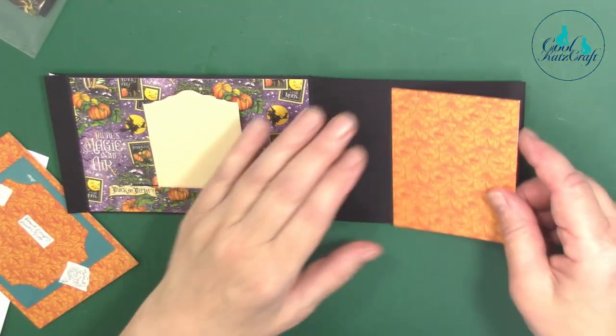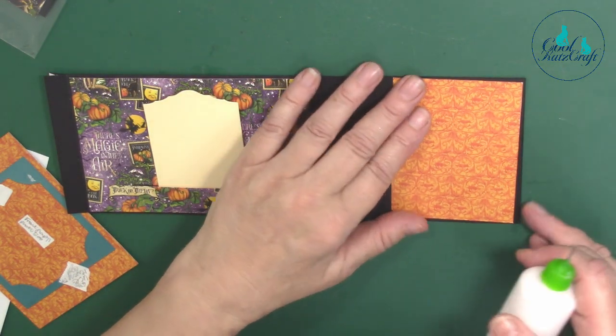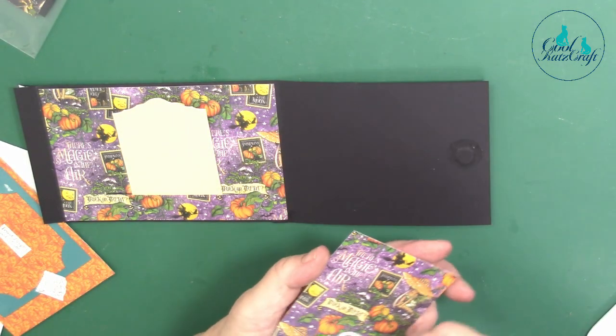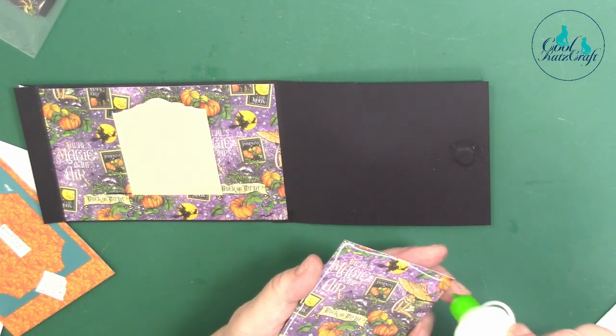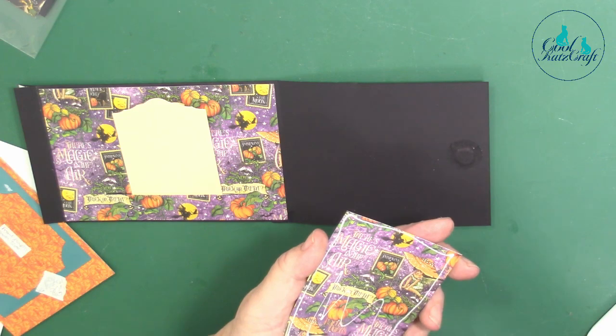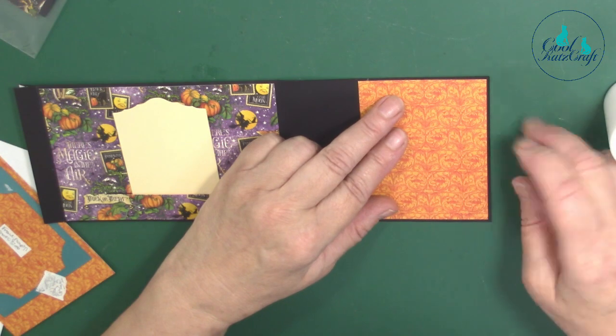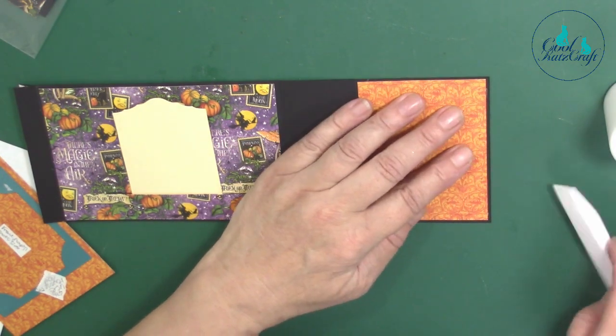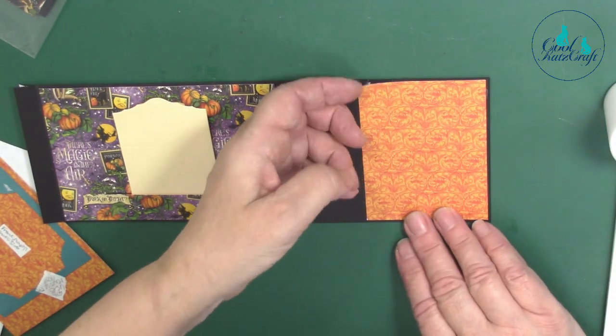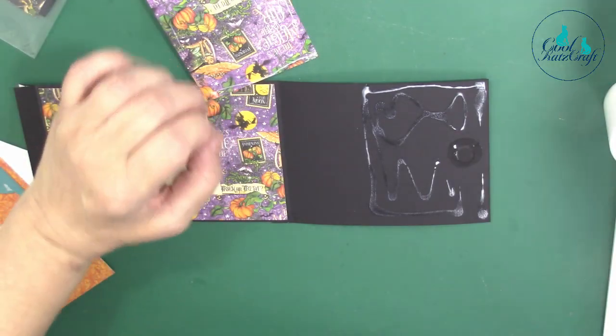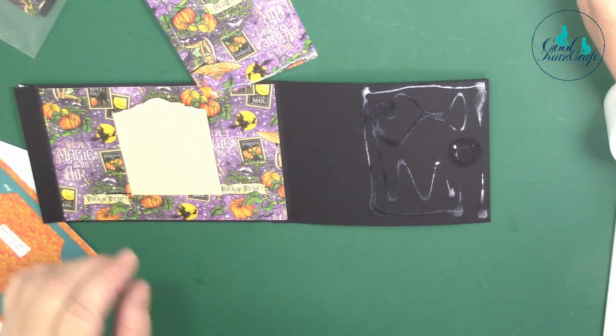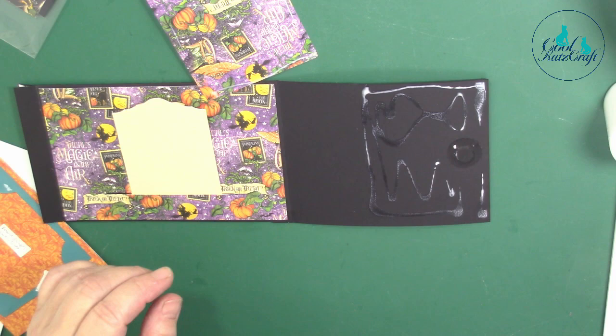So then we're going to pop our next piece on, which is going to be our little horizontal pocket. Again, you can flip the sides if you want. Do whichever you prefer. Oh, no. Take that off. That's something I've forgotten to stick. This is your little tabs for opening your pages.